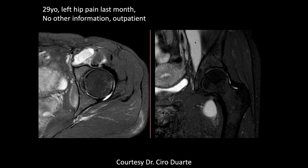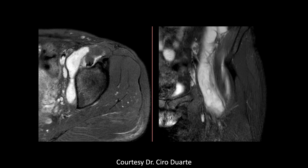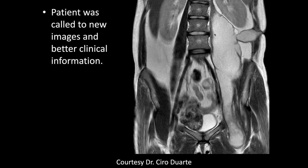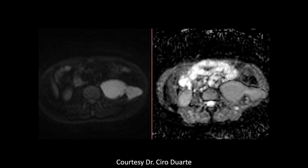An iliopsoas abscess is seen with diffuse surrounding edema and rim enhancement on post-contrast images. It's very extensive throughout the entire left iliopsoas muscle, with a tract extending to the left lateral abdomen — possibly the initial site of introduction. Diffusion restriction and rim enhancement are present. The patient had prior TB surgery and is HIV positive.